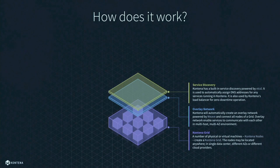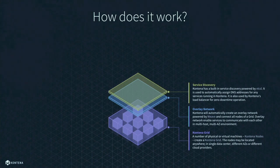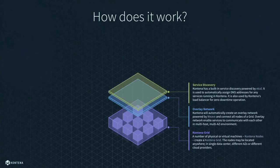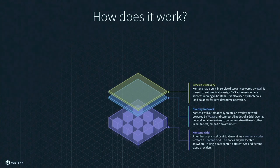Contena also configures service discovery based on DNS, so it's really easy for your application to find your MySQL database, for example, based on a DNS name. We also have an etcd key-value store available within the grid. If your application needs something more robust for service discovery, the key-value store is always available within the grid. The etcd is also used internally in Contena, for example to power the container's load balancing functionality.